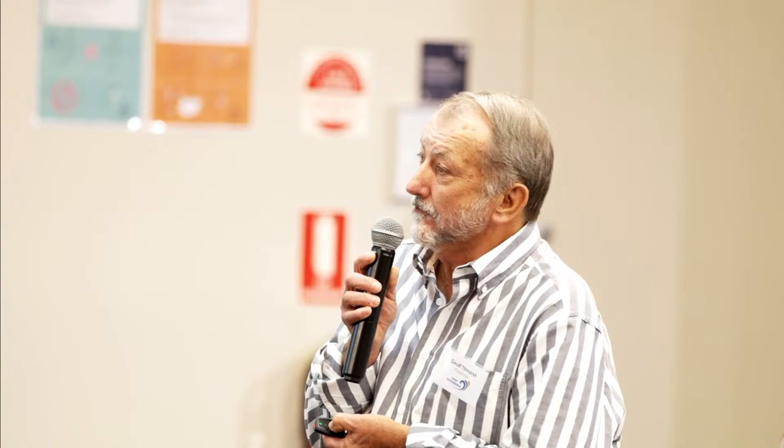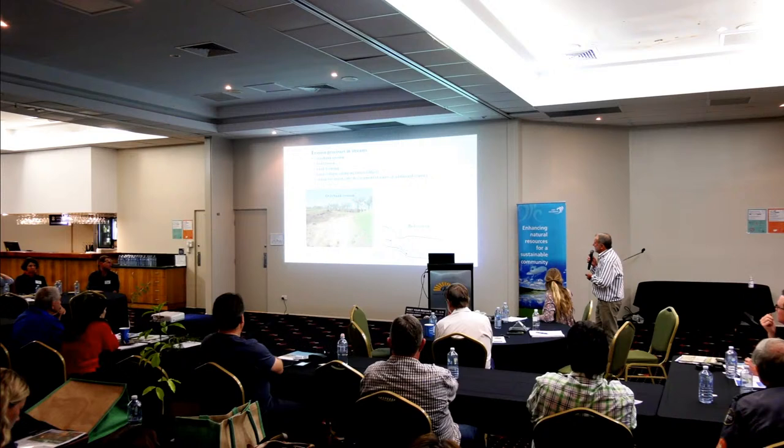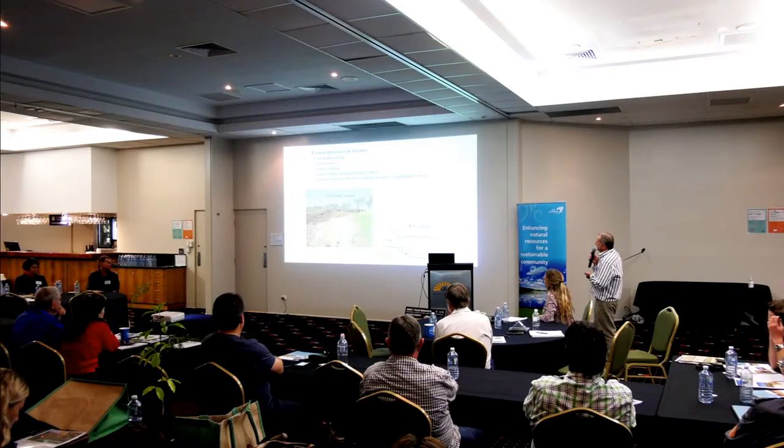In streams — this is more applicable up here than some of the other things we were talking about this morning. These are the main erosion processes in a stream. Overbank erosion: this example here of overbank erosion — that's Oakey Creek just up from Dalby. The creek's in there with farmland out here and it's got a natural levee, a high place along the bank. During the 2011 flood it overtopped and washed a fair hole through there, and we had to patch that up.